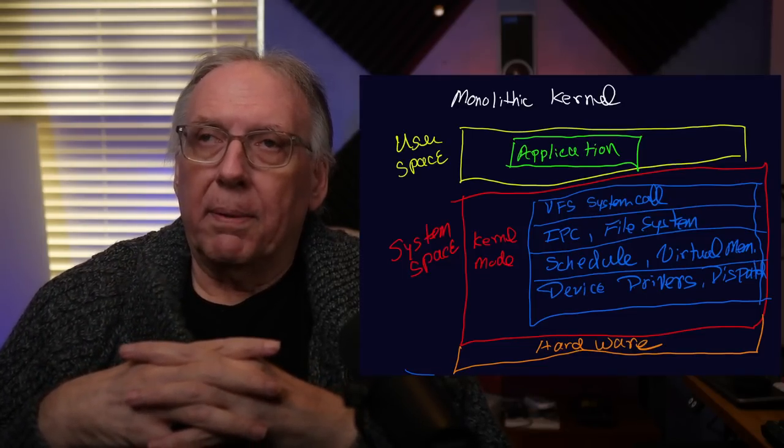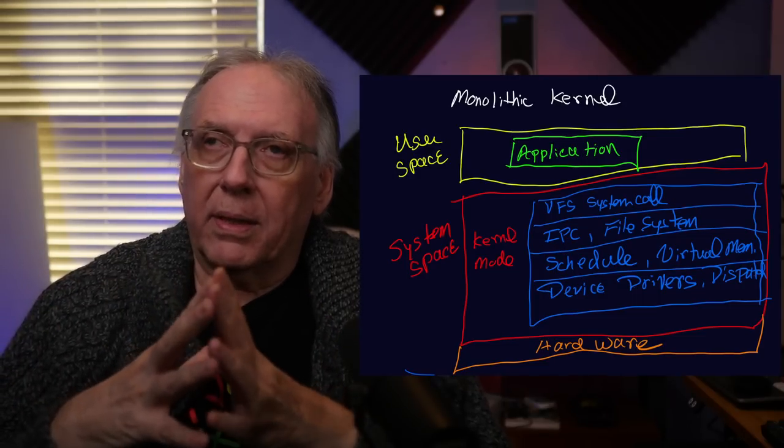They were putting together all the utilities that Unix had. At the time they were working on this, Unix had hundreds of utilities. So they had developed the compilers, the editors, the file system tools, and a bunch of utilities that Unix had. But they lacked one thing — and that was a kernel.